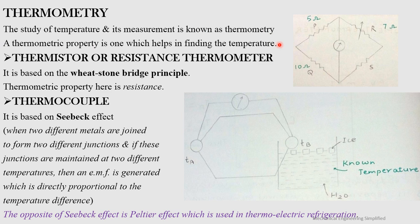A thermometric property is one which helps in finding the temperature. The resistance thermometer, also called a thermistor, is based on the Wheatstone bridge principle. You can see a Wheatstone bridge with resistances P, Q, R, and S.